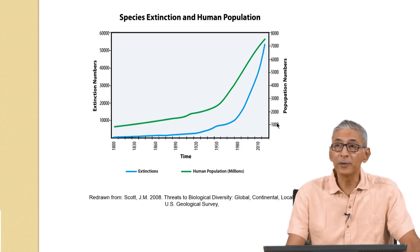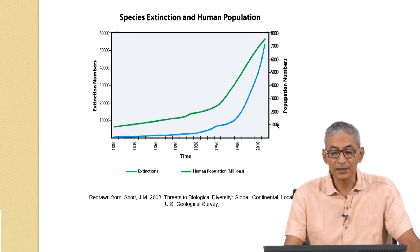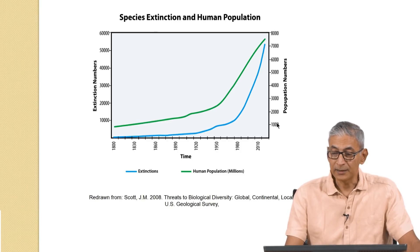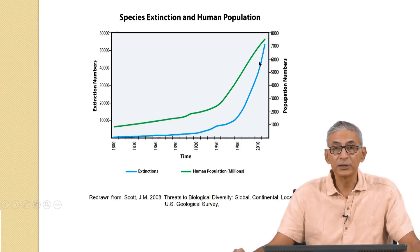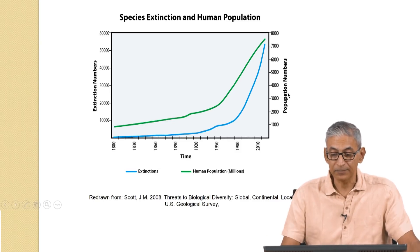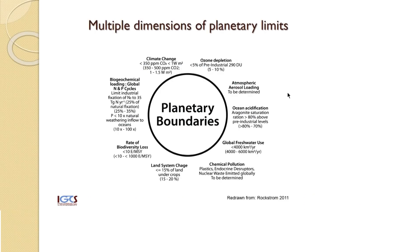Human population has also been on the rise during this period. But if you look at the blue line, which has to do with extinctions, that pace is actually exceeding the pace of human population growth. The way to think about that has been to focus on what has been known as planetary boundaries — a relatively new framework to think about sustainability.